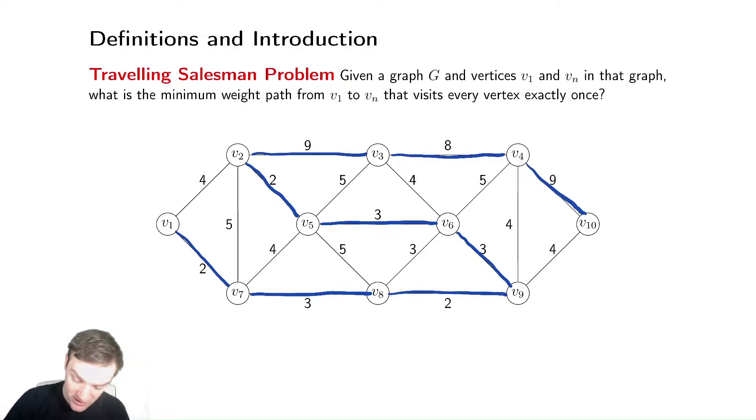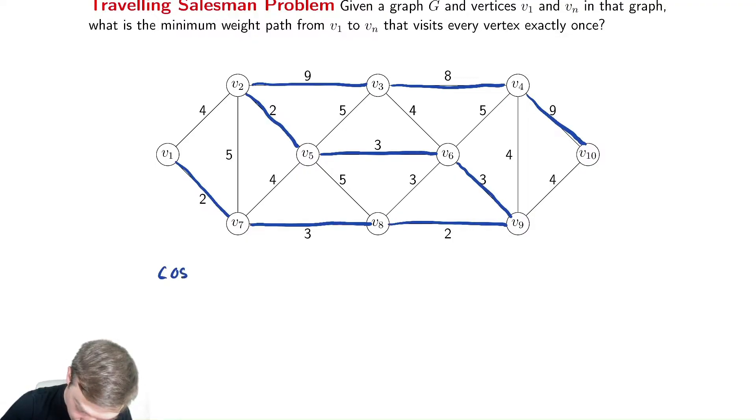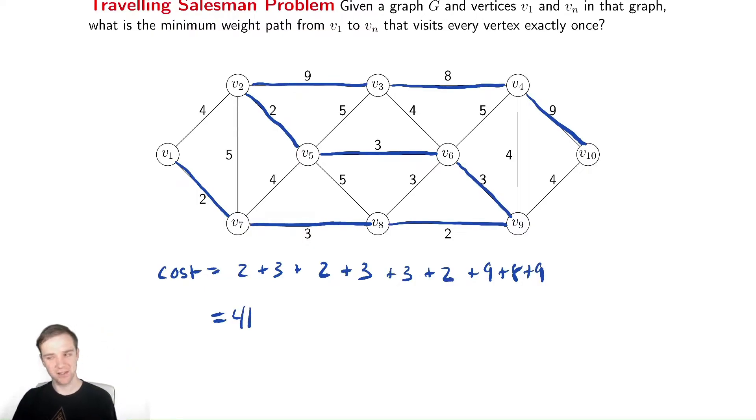And let's see what the cost of that is. The cost of that path is 2 plus 3 plus 2 plus 3 plus 3 plus 2. All that's great. Then plus 9 plus 8 plus 9. That's real sad. So we have 5, 10, 15 plus 17, 26. So this is a cost of 41. And that seems maybe not too bad.